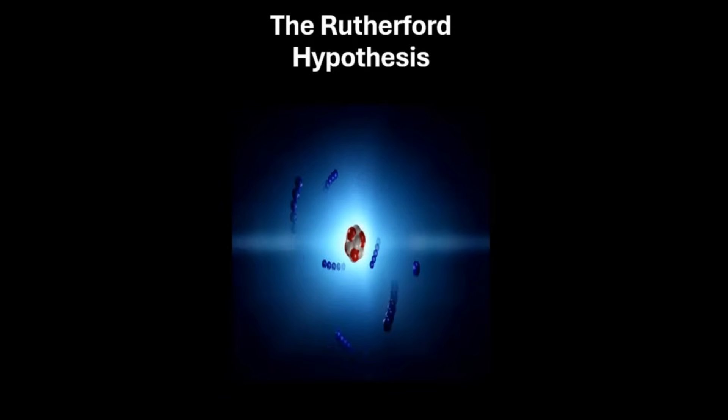According to Rutherford's hypothesis, the atom is primarily composed of empty space with a minuscule dense nucleus at its core. He envisioned this nucleus as containing nearly all of the atom's mass and carrying a positive electric charge. Electrons, in contrast, were believed to orbit around the nucleus at a distance, akin to planets orbiting around the Sun.